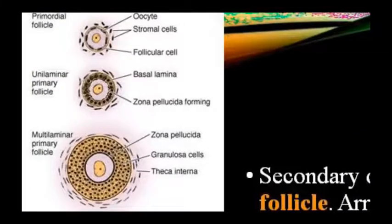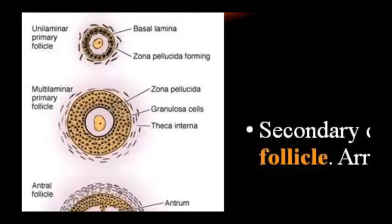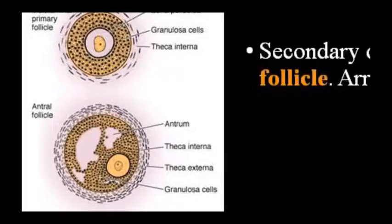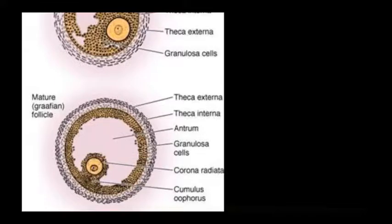Looking at the enlarged follicle diagram: the primordial follicle shows oocyte and stromal/follicular cells. The unilaminar primary follicle has a basal lamina and zona pellucida forming. Granulosa cells develop and the theca interna cells appear. In the antral follicle, an antrum (central cavity) forms, with theca interna inside and theca externa outside, and granulosa cells in between. In the mature Graafian follicle: outer theca externa, inner theca interna, then granulosa cells, then the antrum, and finally the corona radiata and cumulus oophorus.